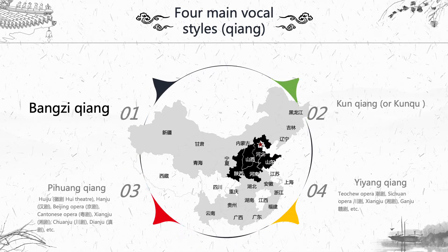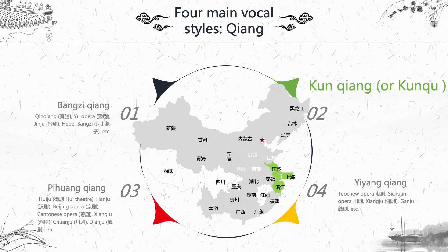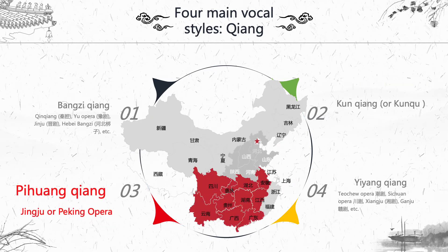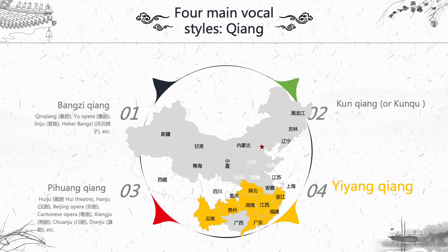The first vocal style is banzi Qiang, which is the style we are interested in — distributed in the middle and east of China. The second is Kunqiang, distributed in the east. The third is pihuangqiang, very popular in the south of China and also in Beijing. Peking Opera is the regional genre of pihuangqiang in Beijing. The fourth is Yiyangqiang, also popular in the south of China.